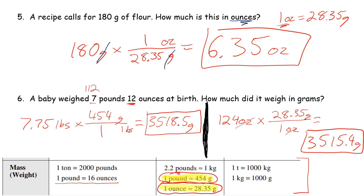That small discrepancy is because these conversions are approximate. Notice the symbol used here — a wavy equals sign — meaning roughly equal to. So 2.2 pounds is roughly equal to a kilogram, 1 pound is roughly 454 grams, and 1 ounce is roughly 28.35 grams. There are more decimal places, so the conversions aren't exact. Try doing the rest of the questions — hopefully that makes sense.